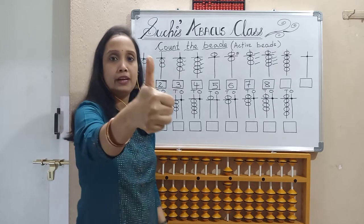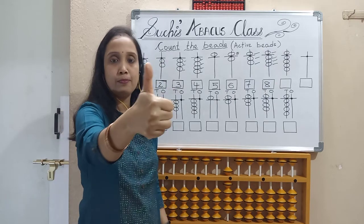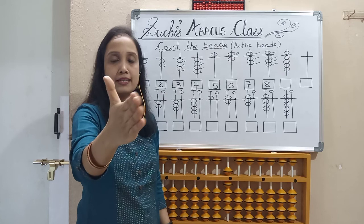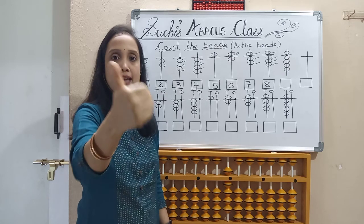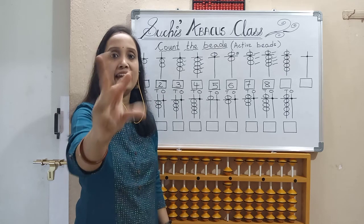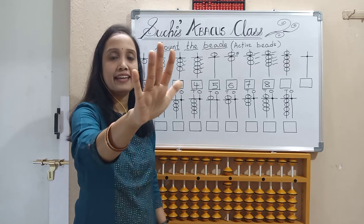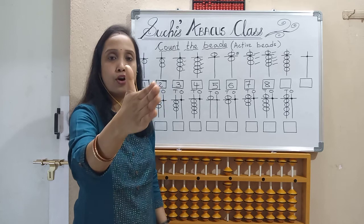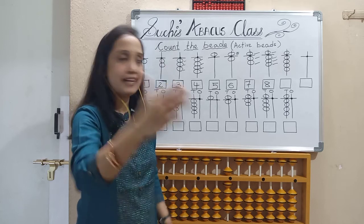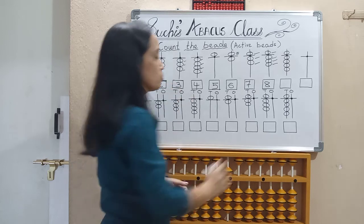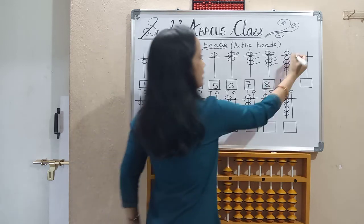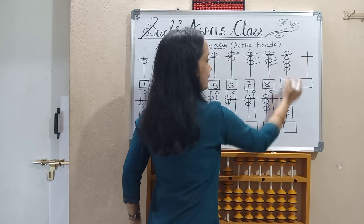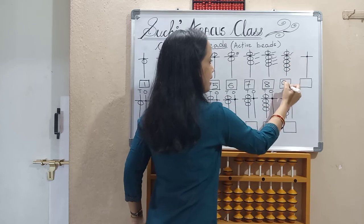Next, 1 upper bead and 4 lower beads. Upper bead is 5, and 4 lower beads: 5, 6, 7, 8, 9 — value is 9.